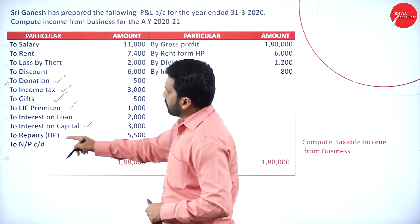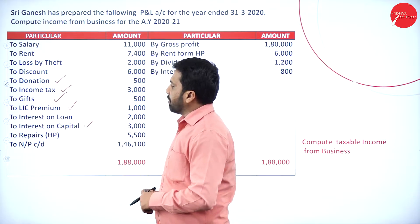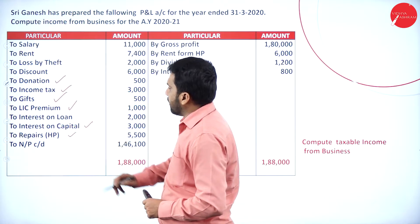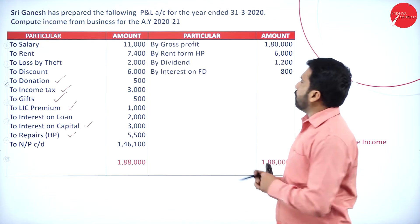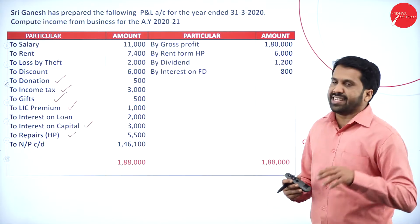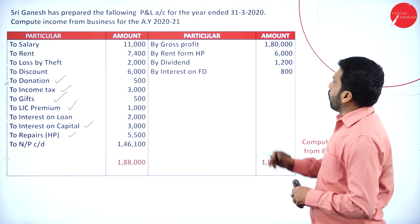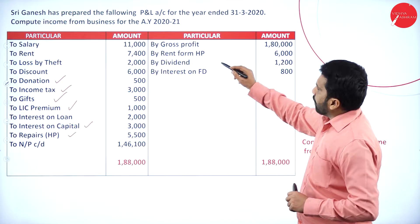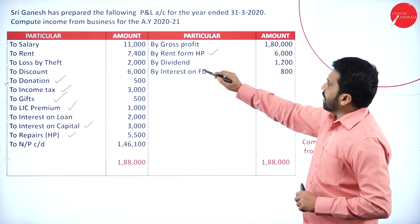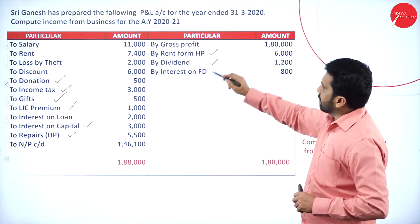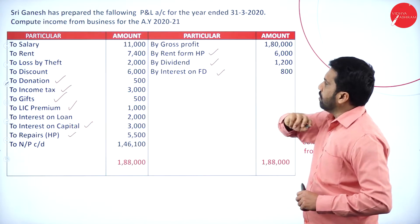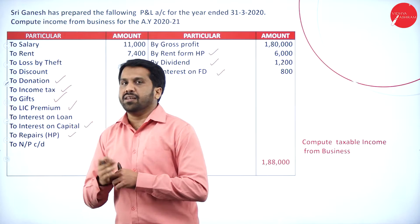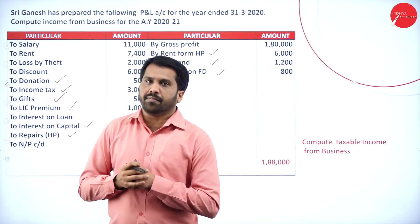Interest on capital — yes, not business. Repairs — made for house property, so we will take it. On the income side, gross profit — we will not touch. Rent from house property — yes. Dividend — yes. Interest on FD — yes. These come under taxable income under other heads.